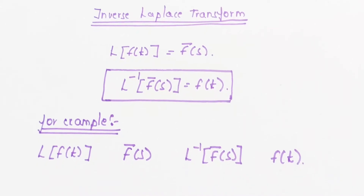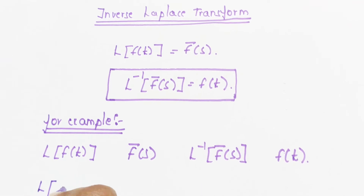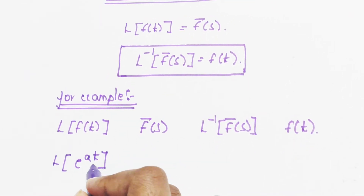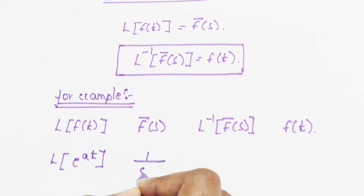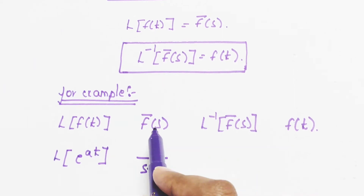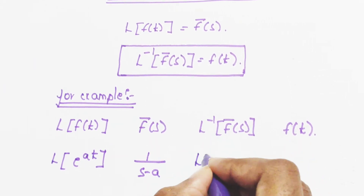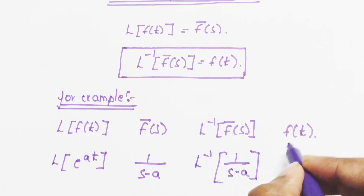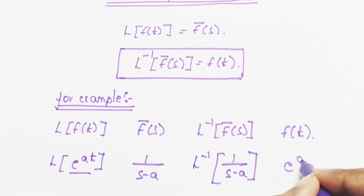Let us take an example. The Laplace of e^(at) — we know its formula is 1/(s − a). So applying the inverse Laplace transform: inverse Laplace of 1/(s − a) gives f(t), where f(t) = e^(at).